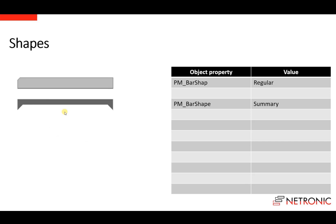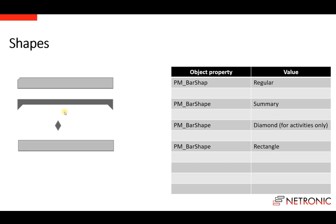The next shape type is the summary shape, which you may know from project management. With this shape, you can express the semantic that multiple activities are summarized by a single activity. If you have only one data point of interest, you can use the diamond bar shape — for example, to visualize milestones in project management. This bar shape is available for activities only. And of course you can also use a rectangle to visualize your bars.